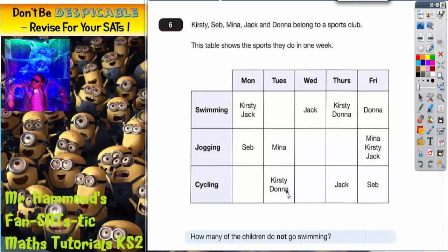This square means that Jack goes swimming on a Wednesday. This square down here, if we read to the side, it's for cycling. It's on the cycling row and it's in the Tuesday column. So this square means that Kirstie and Donna go cycling on a Tuesday.